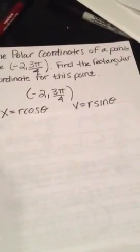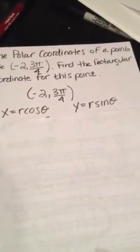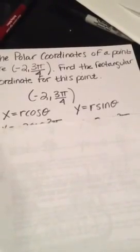x equals r cosine theta and y equals r sine theta. So r is negative 2 and theta is 3 pi over 4, so you just plug those into each problem.